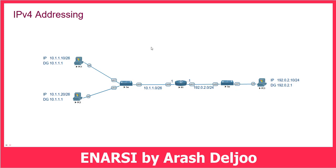Here we have a simple scenario. In this scenario, I am going to talk about IPv4 addressing. We have PC1 and PC2 — these two PCs are connected to one switch, and after that we have one router. This is our first network. We also have another network: one PC, PC3, connected to a switch and finally to the router.